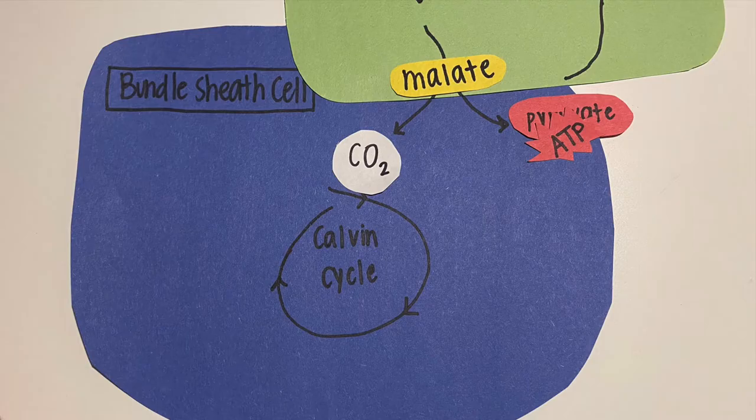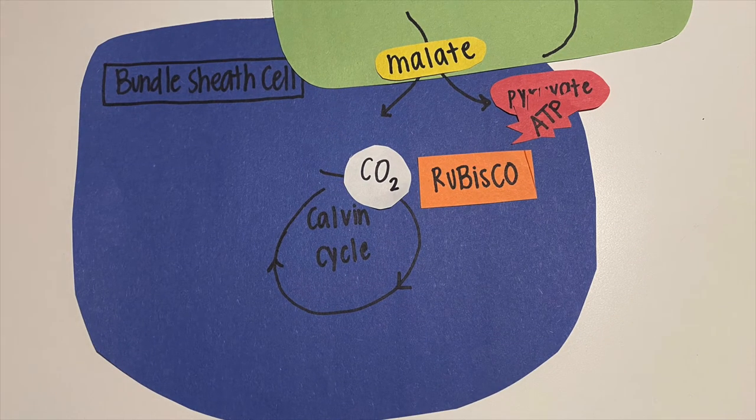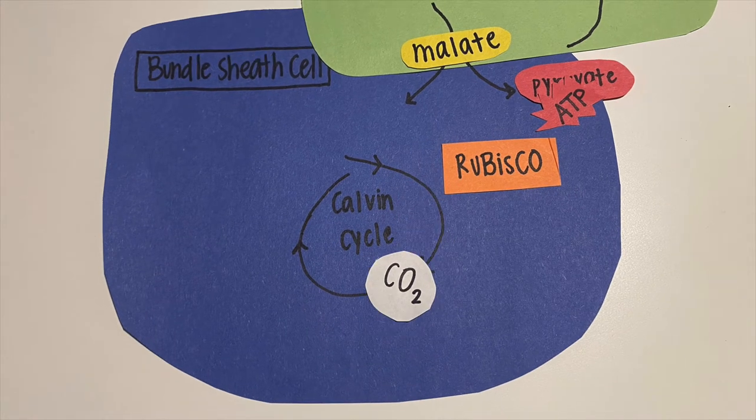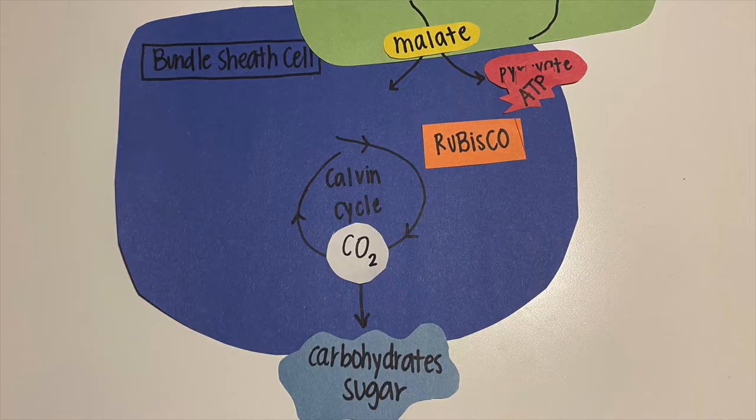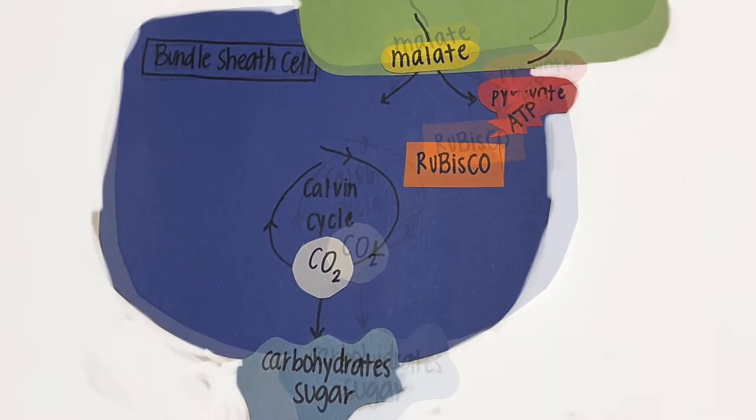Carbon dioxide goes through the Calvin cycle, producing carbohydrates. The bundle sheath cell allows carbon dioxide to concentrate near rubisco, where it does not have to interact with oxygen, removing the need for photorespiration.